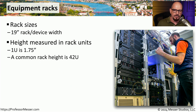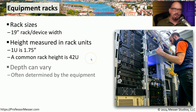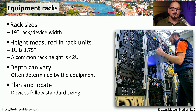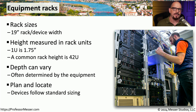Most racks, like the ones we see here, are generally about 42U in height. Although the width is standardized, the depth of these racks can often vary. There might be racks that are very shallow, or others that might support a much longer piece of equipment. Fortunately, most devices follow this standardized form. We know that if we're receiving a piece of equipment that is rack mountable, it will most likely be 19 inches wide. We'll just need to make sure that we have a rack that is deep enough to handle that particular piece of equipment.